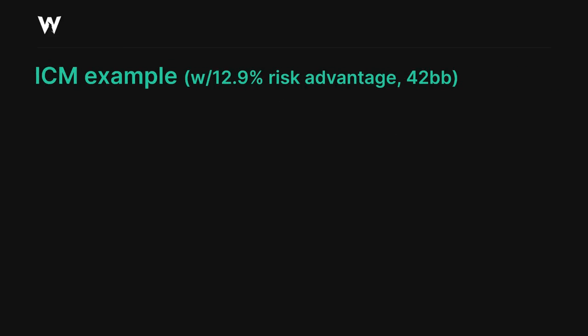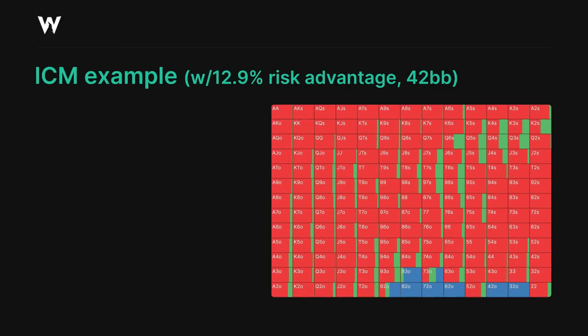Now, before we finish up looking at the small blind unopened node, let's take a look at how ICM might impact this node. I've pinpointed two fairly extreme scenarios in the GTO Wizard Archive, where the small blind either has a significant risk advantage or a significant disadvantage.